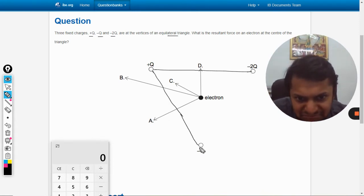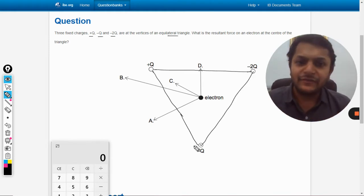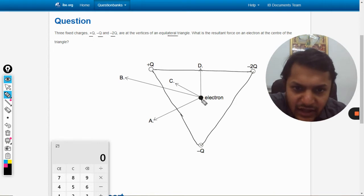So this is a triangle and it is given that this triangle is an equilateral triangle, so all the sides are equal. And this is an electron that is placed at the center, so this is negative charge.